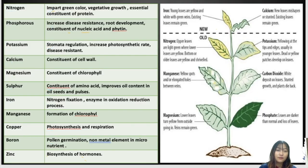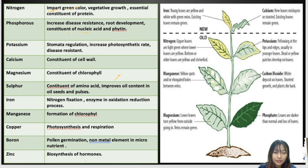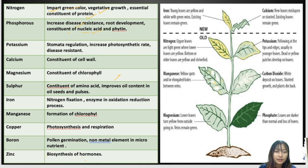To make it easier, I've made a table showing the role of all these mineral nutrients. Nitrogen imparts a green color, increases vegetative growth, and is an essential constituent of protein. Phosphorus increases disease resistance, root development, and is a constituent of nucleic acid and phytin.